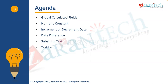Then there is text length. If I have a requirement to find employees whose last name is no more than 10 characters long, I can pull out all employees with a last name greater than 10 characters. Text length helps me recognize which fields have a particular last name greater than 10 characters.